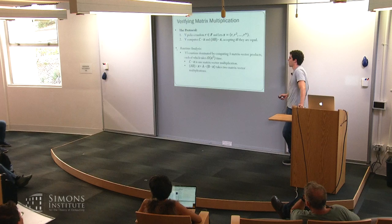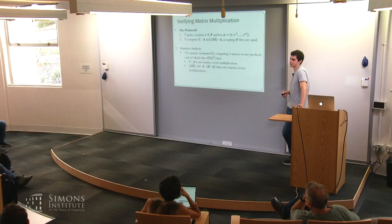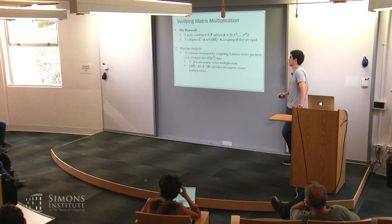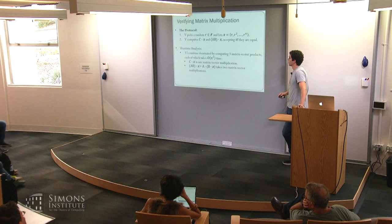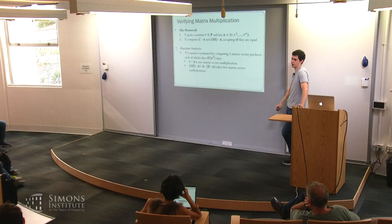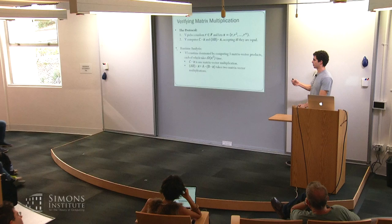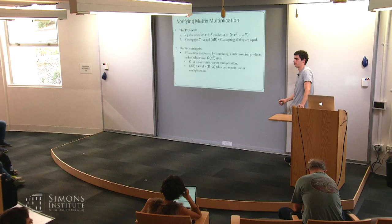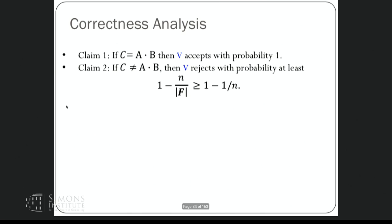Throughout this talk, I'm counting addition and multiplication in the field as one time step. So the verifier runs in O(n²) time — linear in the input size — and you can't do better since the verifier has to read the input. The correctness is analogous to the equality protocol: if C equals AB, the verifier always accepts; if C is wrong, the verifier rejects with probability at least 1 - 1/n.